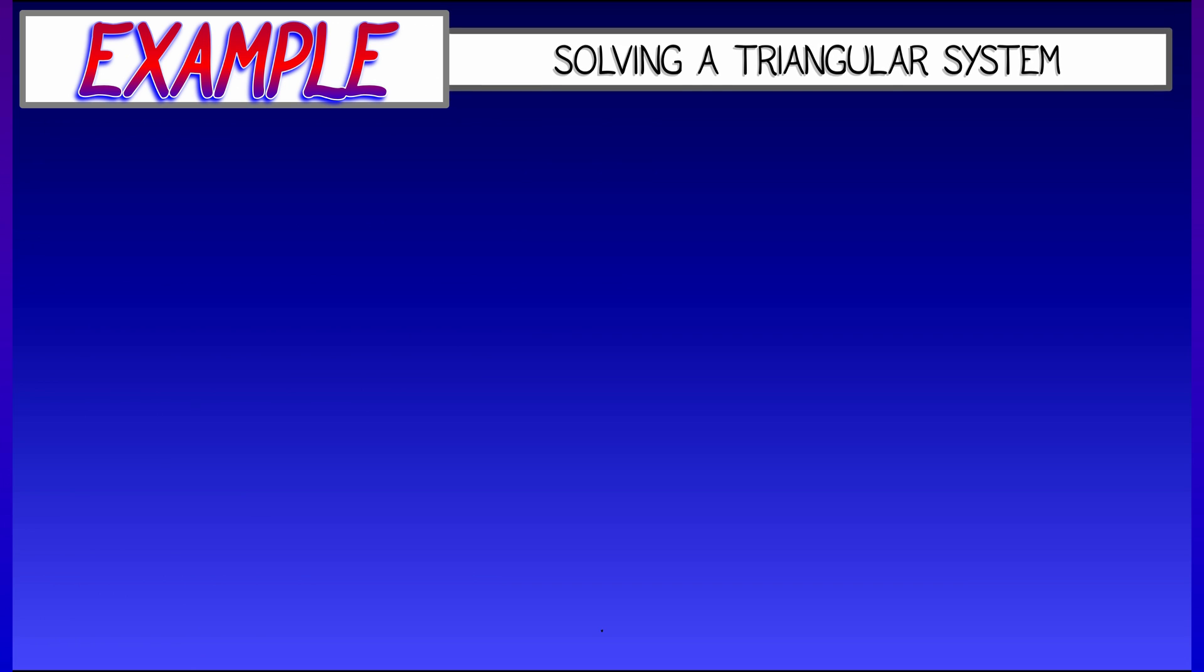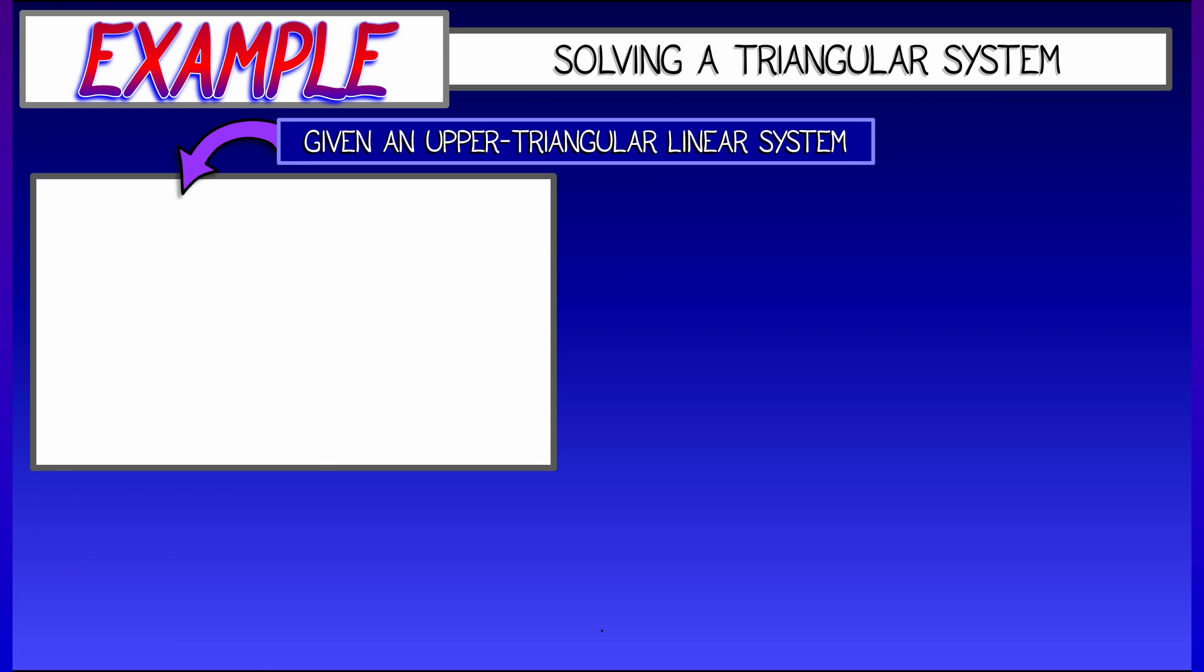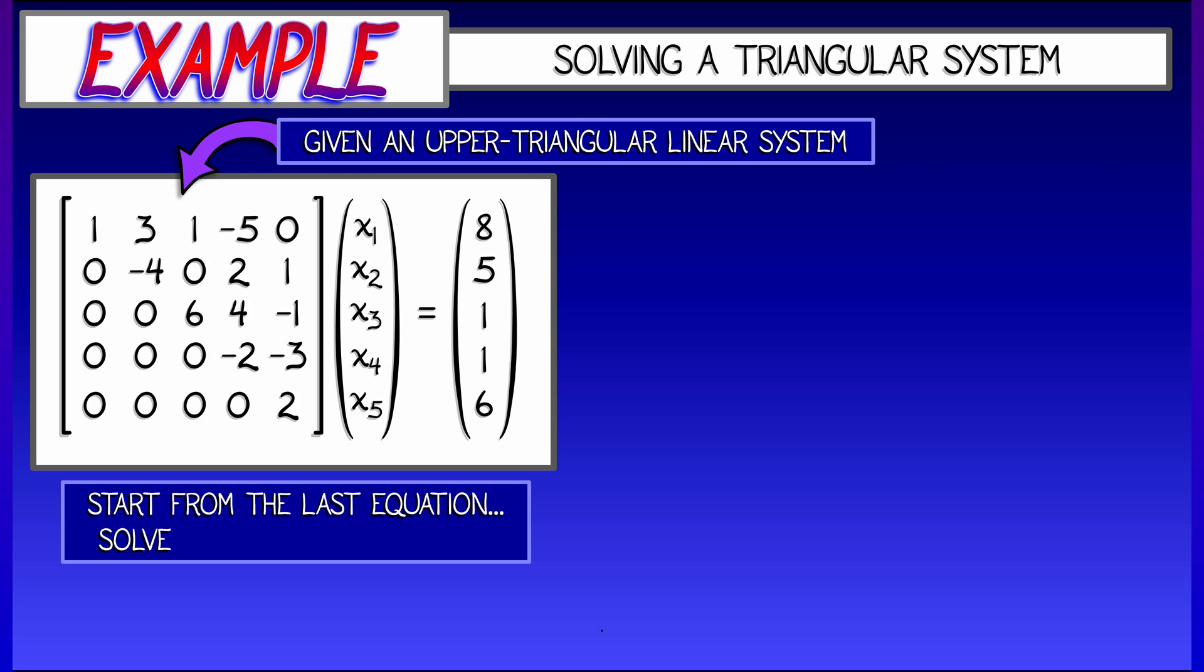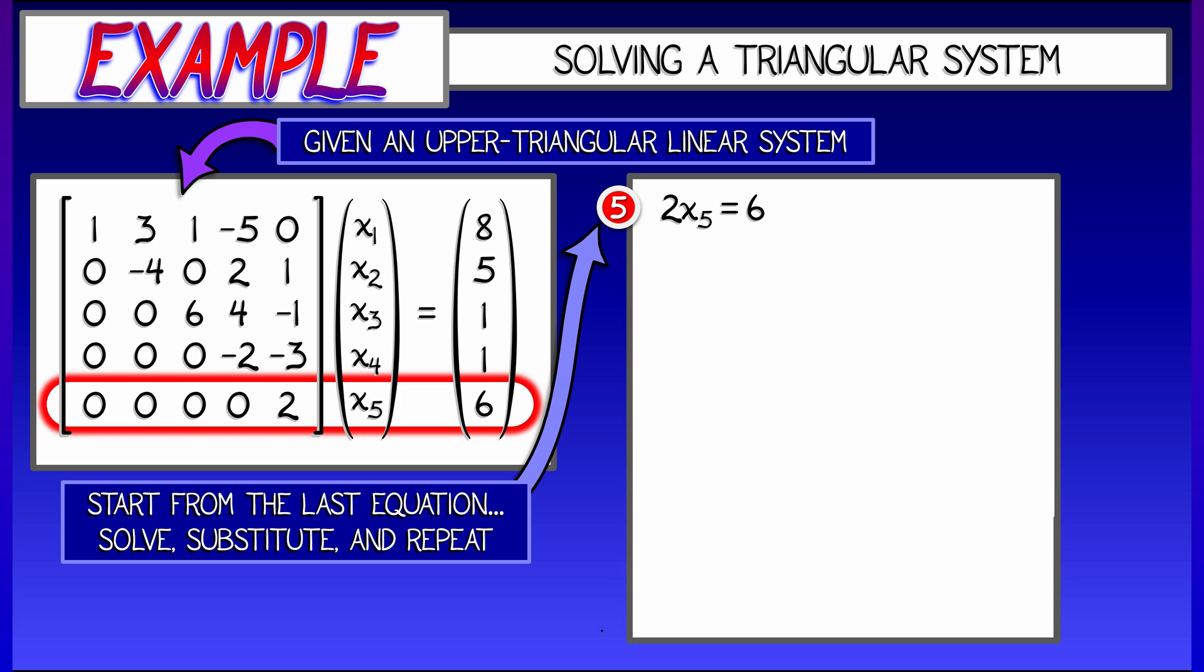Let's take a look at an example of solving a triangular system. Here's a fairly simple 5x5 upper triangular matrix applied to a vector of unknowns, X1 up through X5, in the form AX equals B. What we're going to do is solve this one step at a time. Let's start with the last row of the matrix, the one with the most zeros. If we read off that equation, it's simple.